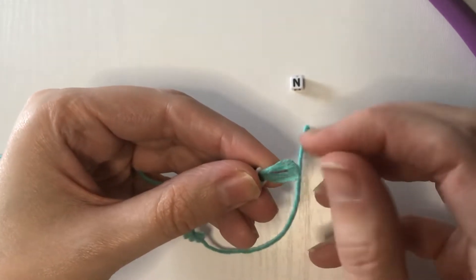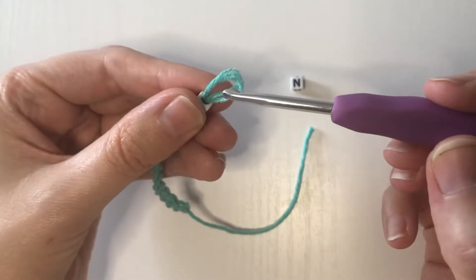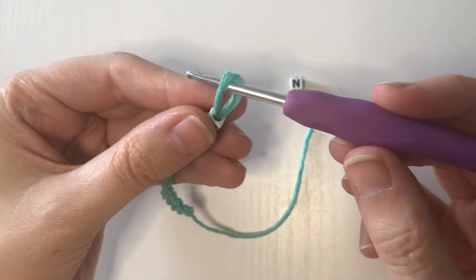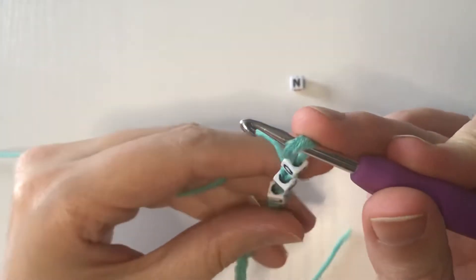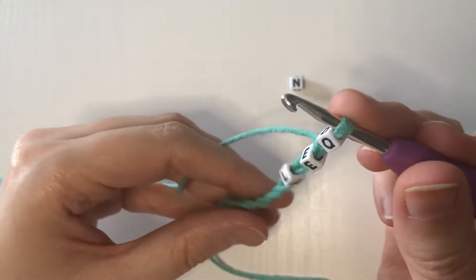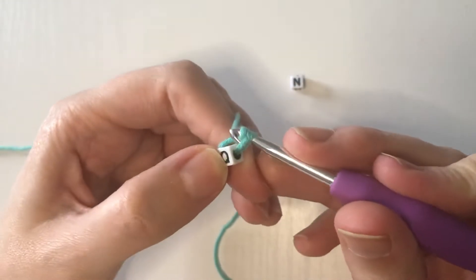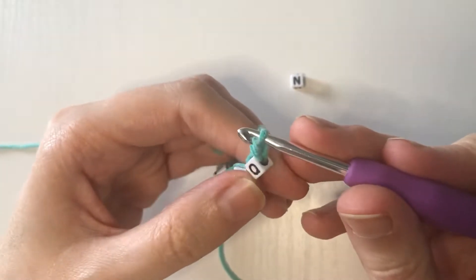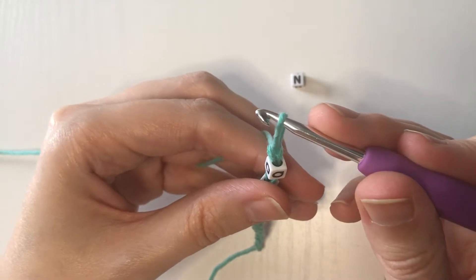So here we have our loop. What do we do with the loop? We put the hook through it, we're gonna pull our long tail a little bit tighter, pretend the bead's not there, and yarn over and pull it through. We have another chain.